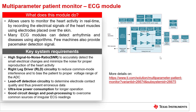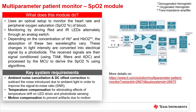The second module is the SpO2 module. This module uses an optical setup to monitor the heart rate and peripheral oxygen saturation, or SpO2 percentage, of blood. The monitoring is done by driving RED and IR LEDs alternatively through an analog switch. Depending on the concentration of HB and HbO2, the absorption of these two wavelengths vary. These changes in light intensity are converted into electrical signals by a photodiode. The received signals are then signal conditioned using TIA, filters, and an ADC, and processed by the MCU to derive the SpO2 percentage using algorithms.